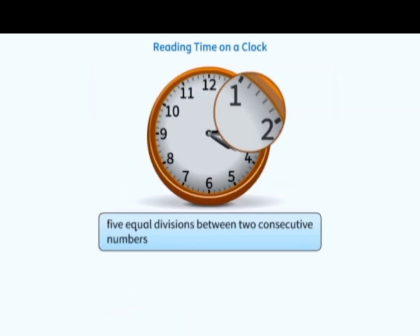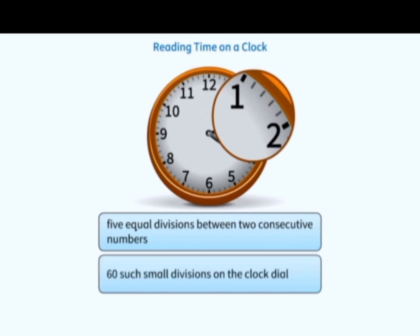There are 5 equal divisions between 2 consecutive numbers. There are 60 such small divisions on the clock dial. Each small division represents 1 minute.